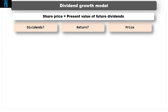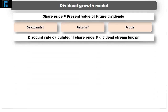However, using this process, if a company knows the share price and can estimate the dividend stream, they can calculate the discount rate applied — i.e. the return required by shareholders. This is represented by the following formulae.